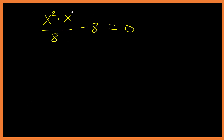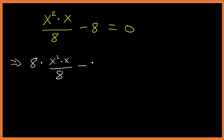We are given x squared times x over 8 minus 8 equals zero. Let's start by multiplying both sides by the LCM. The LCM is 8, so we multiply: 8 times x squared times x over 8 minus 8 times 8 equals 0 times 8.